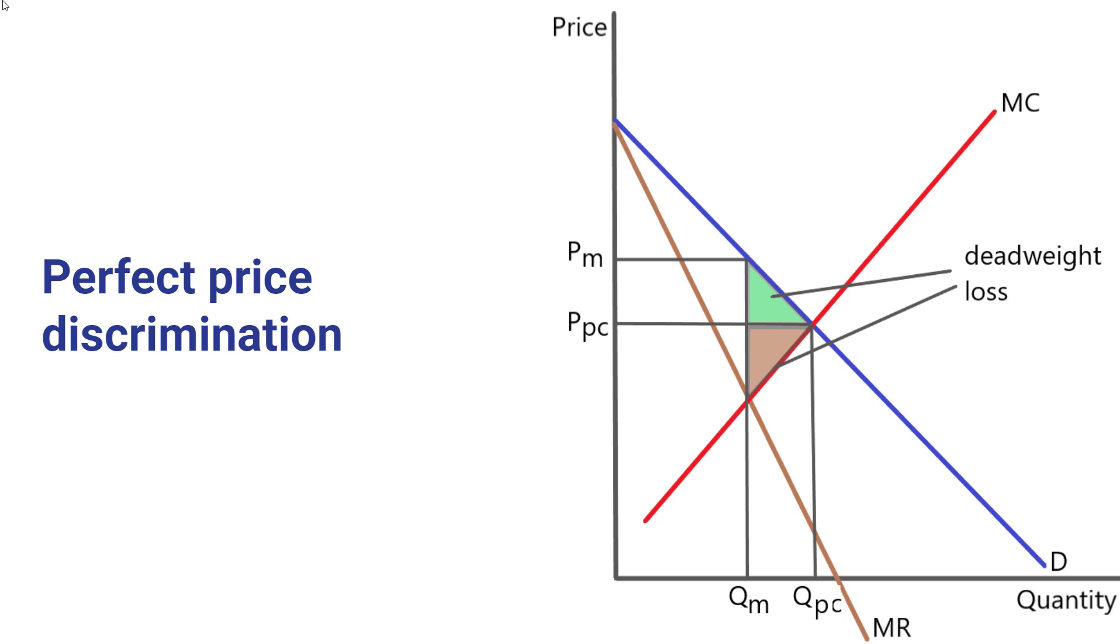However, there is a way around this. And that is that if a firm engages in perfect price discrimination, it charges each customer the highest price they're willing to pay. Now, in practice, this is really difficult to do. But imagine you could essentially charge each customer the price that is given by the demand curve corresponding to their purchase.